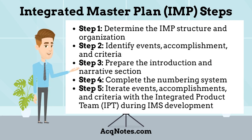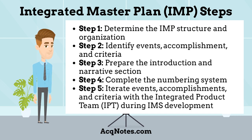The five steps in developing an Integrated Master Plan are: Step 1 — Determine the IMP structure and organization. Step 2 — Identify events, accomplishments, and criteria. Step 3 — Prepare the introduction and narrative section. Step 4 — Complete the numbering system.